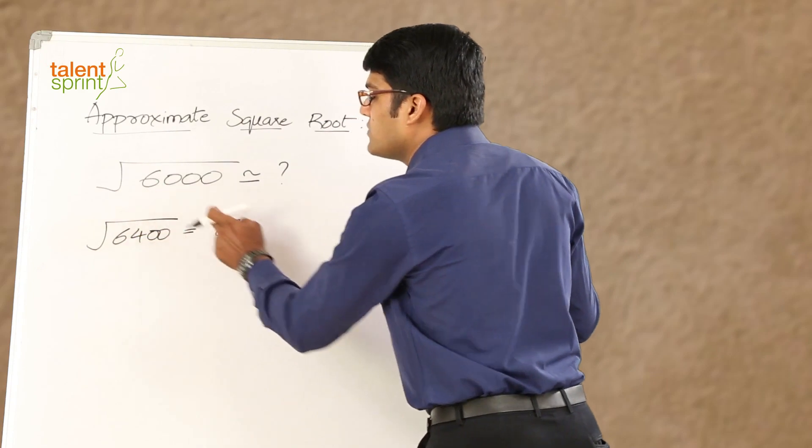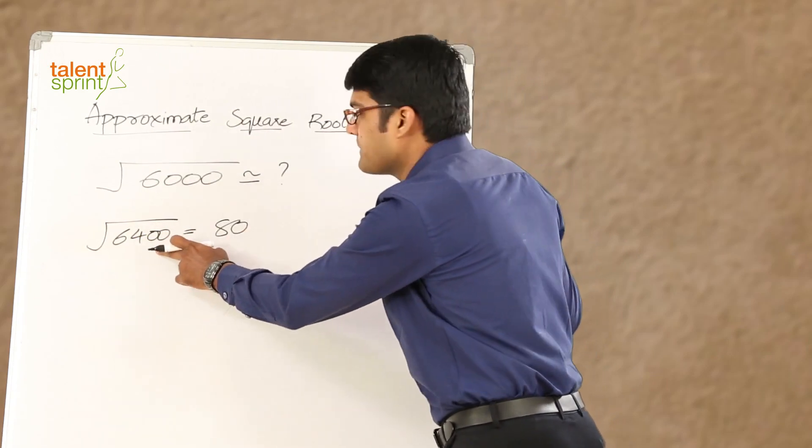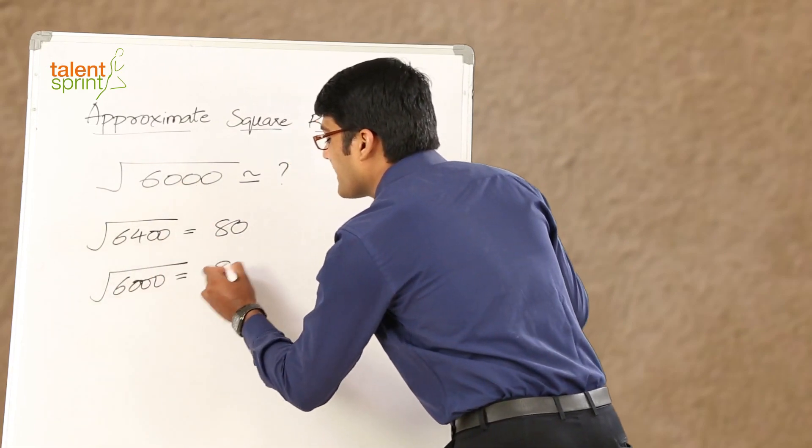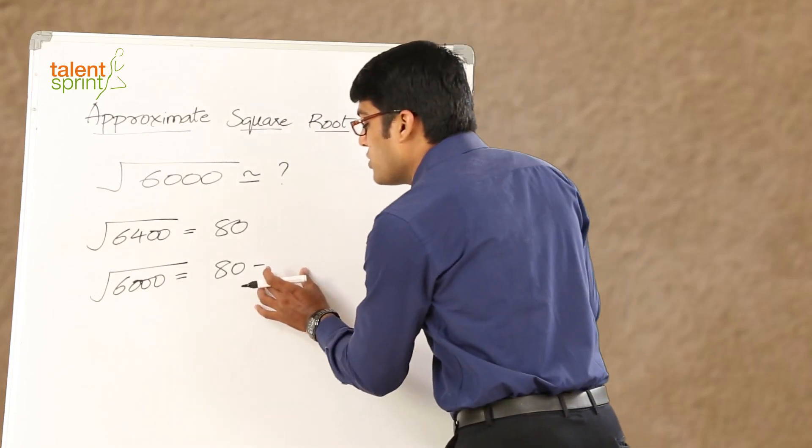Definitely, square root of 6,000 should be less than 80. Why is it so? Because 6,000 is less than 6,400. So we can say the square root of 6,000 will be equal to 80 minus. Now, here is the most important part. What do we subtract?